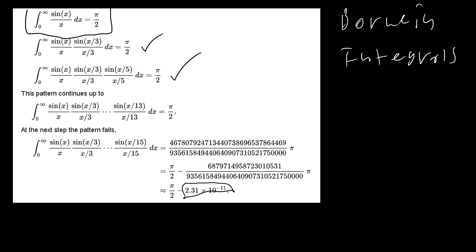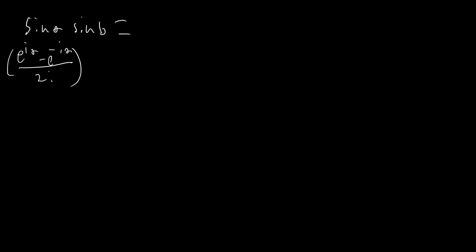Let's talk about the identities we're going to be using. The first is the sine product identity, which can be proved using the complex definition of sine: e^(ib) minus e^(-ib) all over 2i. When you multiply that out you find that sin(a)·sin(b) equals one half times cosine of (a minus b) minus cosine of (a plus b).